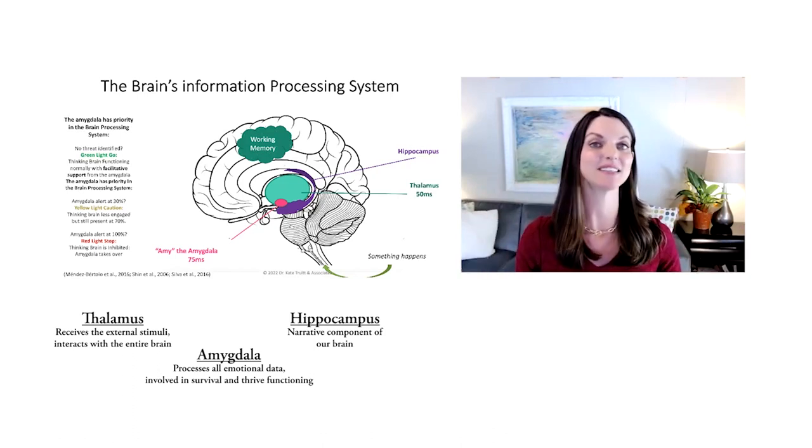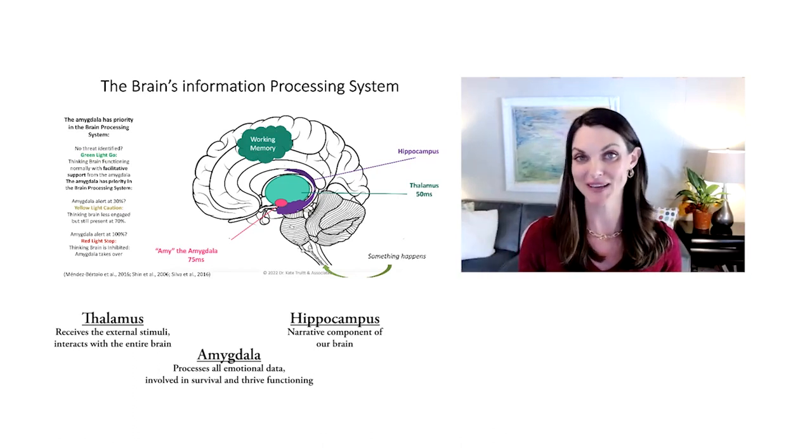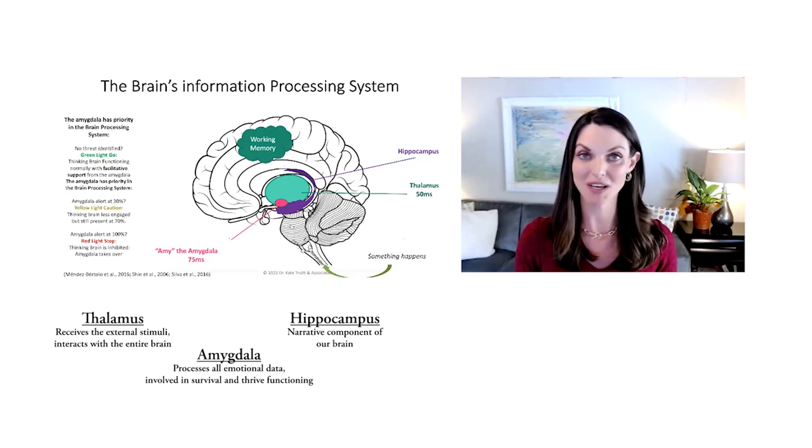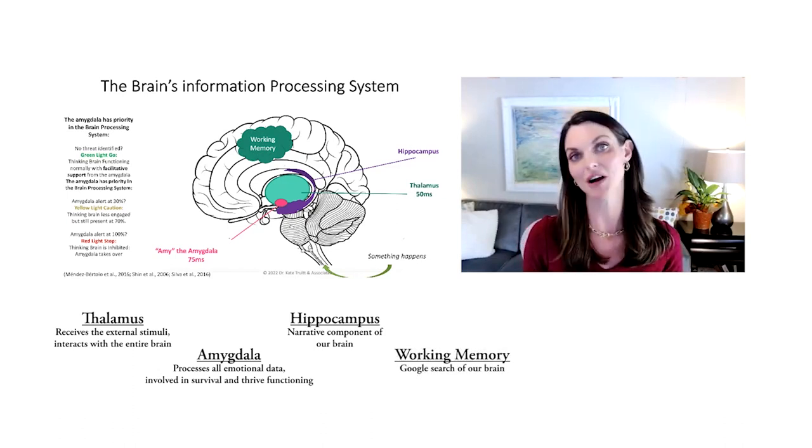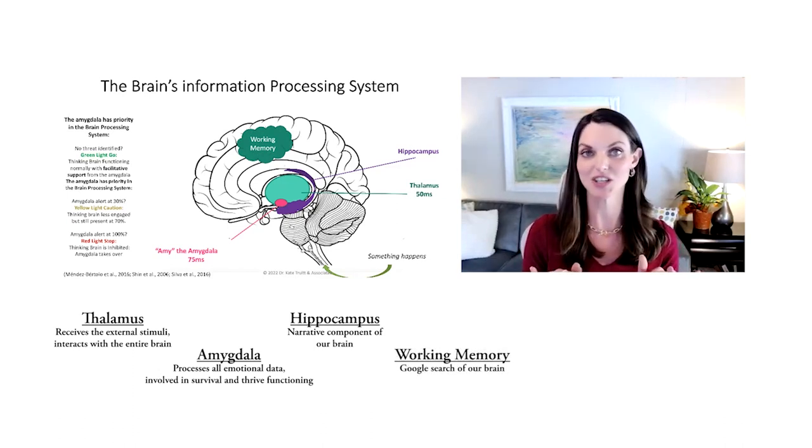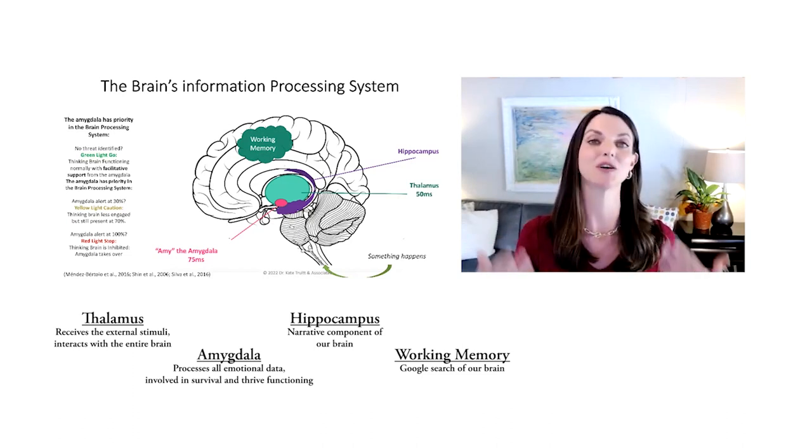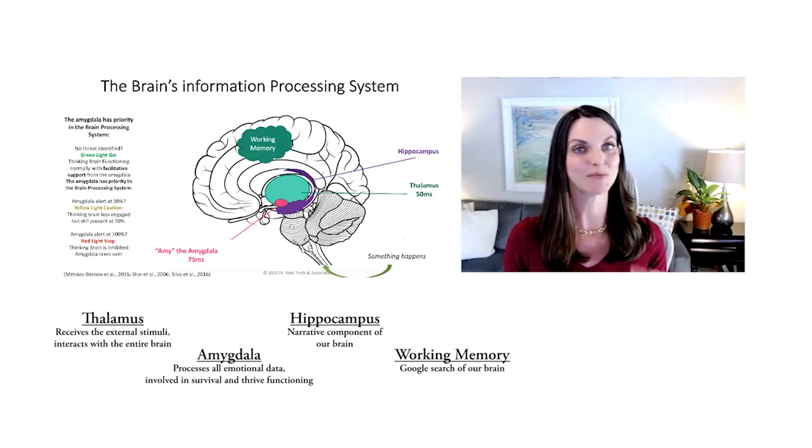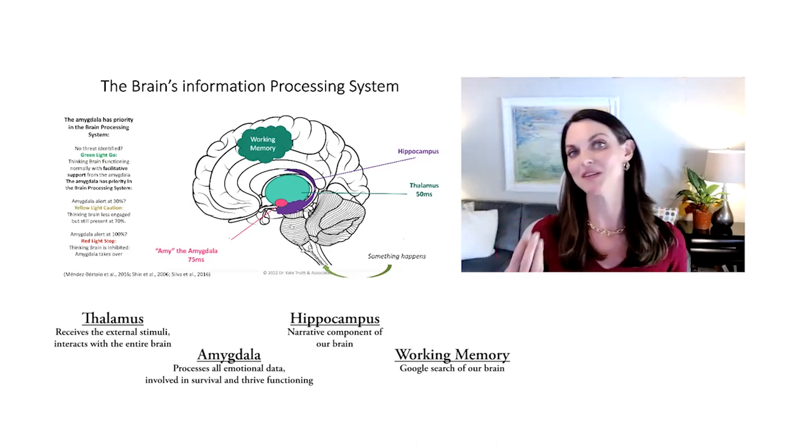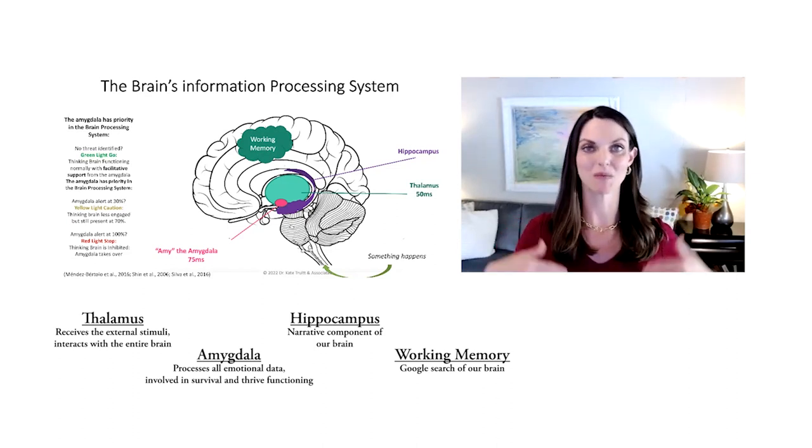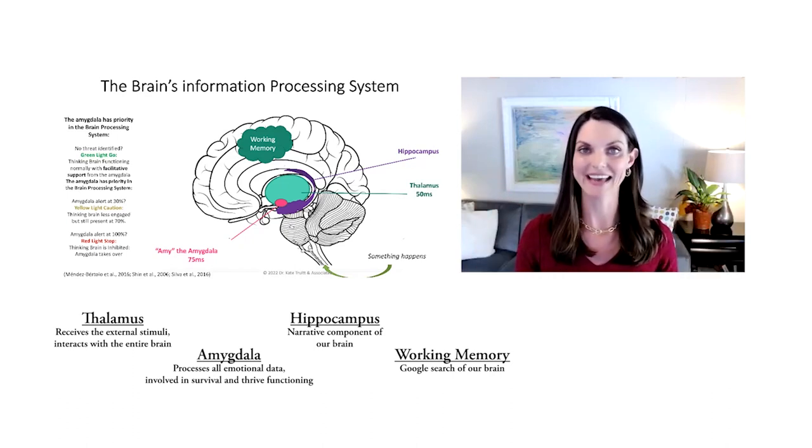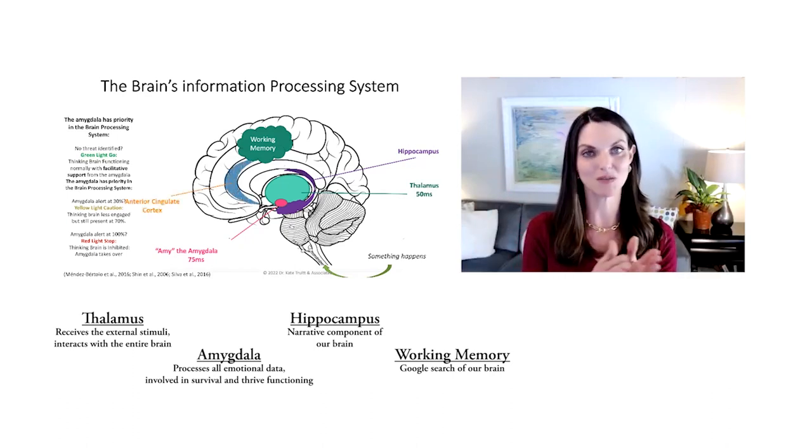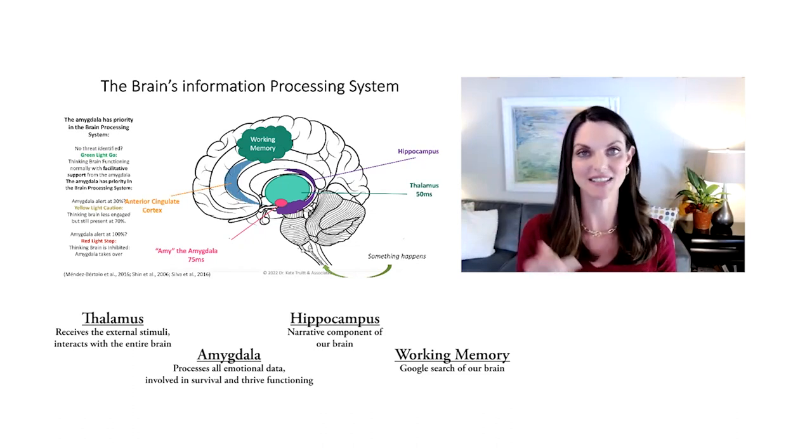I love to think of the working memory as the Google search of our brain. It's like we're putting in a search term and the working memory goes, 'I'm going to go find related components to that search term.' Here it might be flower or it might be beloved pets, and the working memory is going to churn up all related data and then help our brain spotlight what matters.